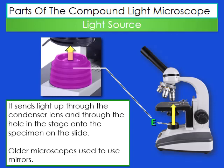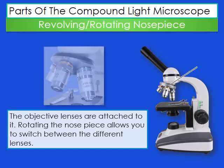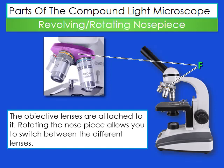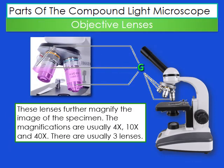The light source sends light up through the condenser lens and through the hole in the stage onto the specimen. Older microscopes used mirrors; the ones we use have a built-in light. The revolving or rotating nosepiece holds the objective lenses, and rotating it allows you to switch between lenses and change your magnification. The objective lenses further magnify the image of your specimen at magnifications of 4x, 10x, and 40x — you should always start with the scanning (4x), then medium, then high.